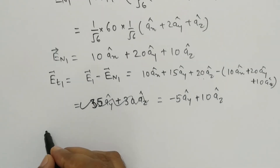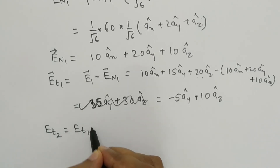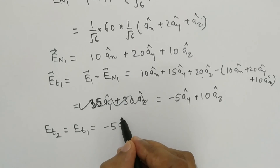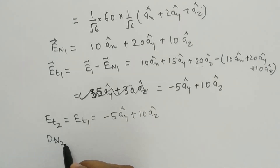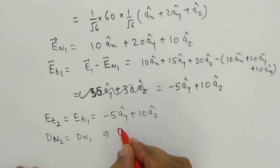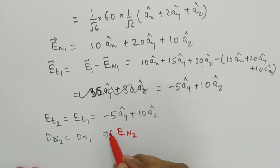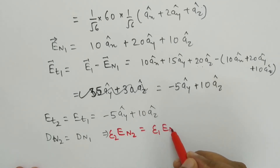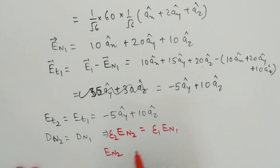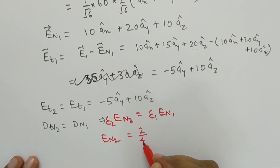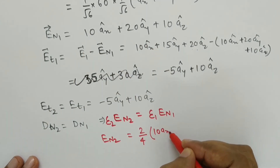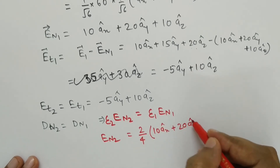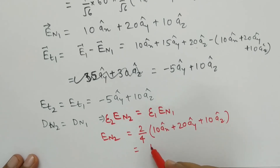Now we apply the boundary conditions. ET2 equals ET1, which is minus 5 Ay plus 10 Az. And DN2 equals DN1, which in terms of electric field gives epsilon 2 times EN2 equals epsilon 1 times EN1. Therefore EN2 equals (epsilon 1 over epsilon 2) times EN1 equals (2 over 4) times (10 Ax plus 20 Ay plus 10 Az), which equals 5 Ax plus 10 Ay plus 5 Az.